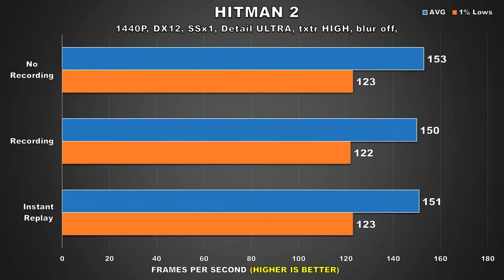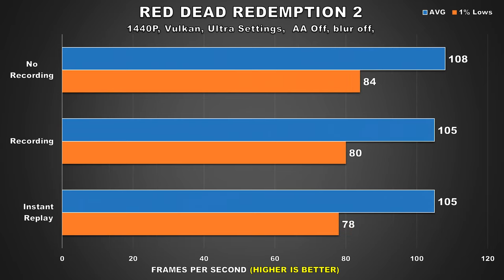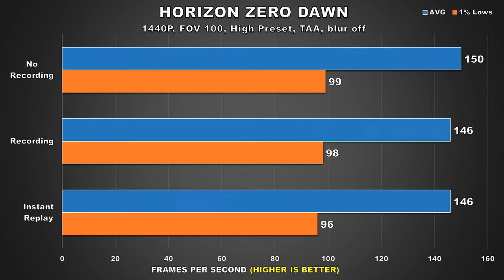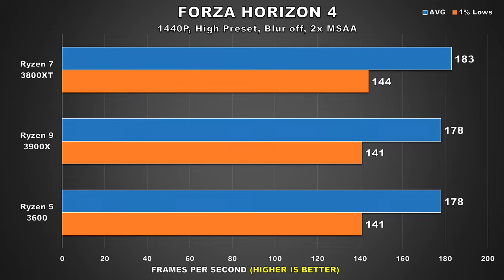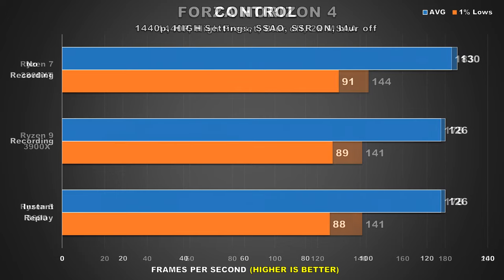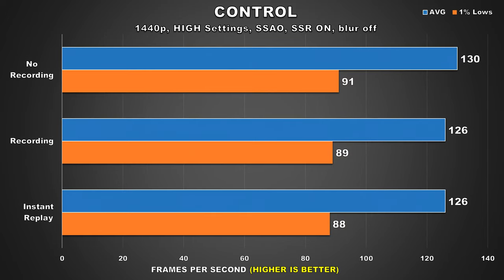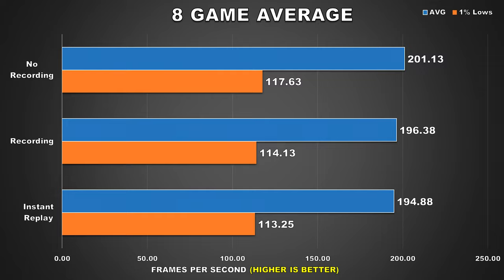For our next title, we'll be taking a look at Hitman 2, and here we can see pretty much identical performance from all three configurations. These differences are extremely small — you could practically call it a tie. So this is excellent. I won't bore you too much; I'll quickly go through the remaining gaming benchmarks because, similarly to Hitman 2, the rest of the titles exhibit the same kind of behavior. The performance losses — whether recording or using the instant replay feature — are quite similar between the two, and when compared to performance without recording, the impact is thankfully very minor. It's completely negligible, so users shouldn't have anything to worry about when using this feature for local recording or streaming.